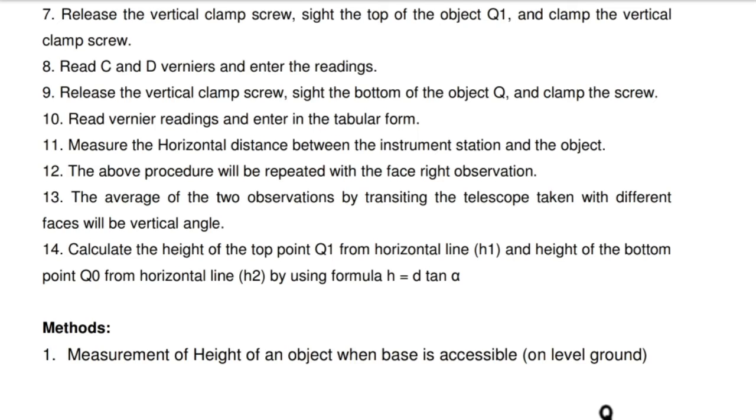8. Read C and D verniers and enter the readings. 9. Release the vertical clamp screw, sight the bottom of the object Q, and clamp the screw.